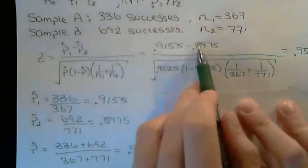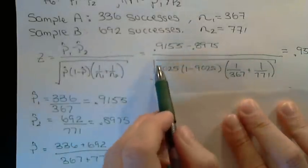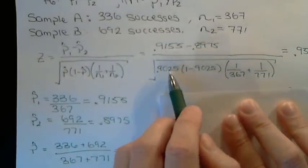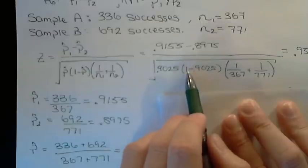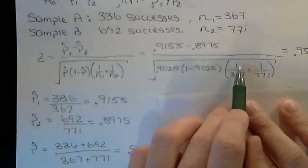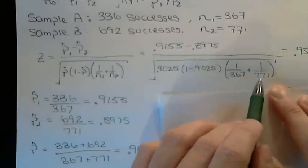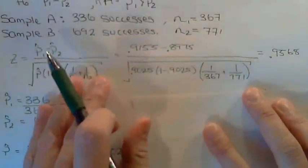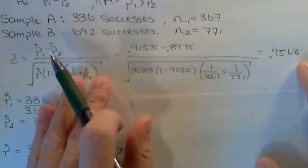Substituting these values in, the difference of the two sample proportions divided by the square root of the pooled sample proportion times 1 minus the pooled sample proportion, times 1 divided by the first sample size and 1 divided by the second sample size, gives a test statistic of 0.9568.